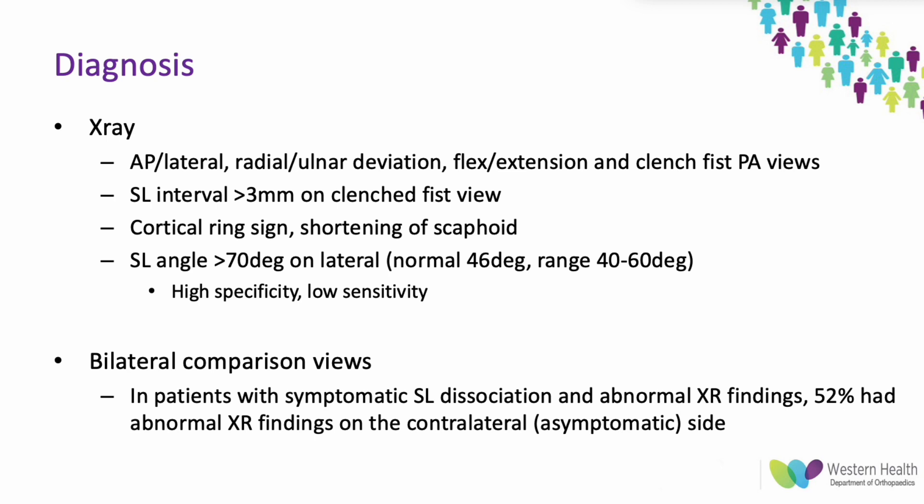The scapholunate angle normally ranges from 40 to 60 degrees; anything over 65 to 70 is considered abnormal, with high specificity. Bilateral comparison views are important — up to 52% of patients with symptomatic scapholunate dissociation had abnormal x-ray findings on the contralateral asymptomatic side. If widening is present bilaterally, the pain may be driven by another pathology and the finding may be pre-existing.